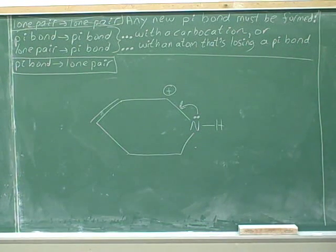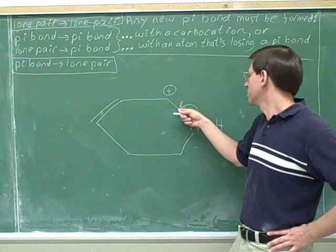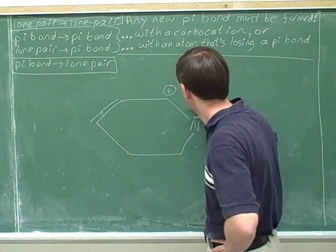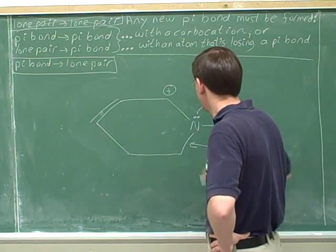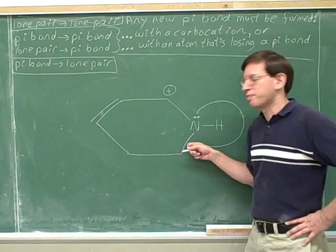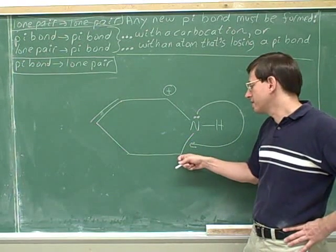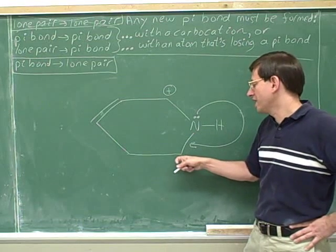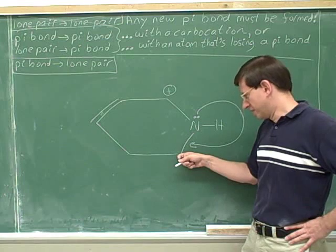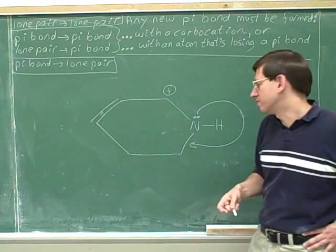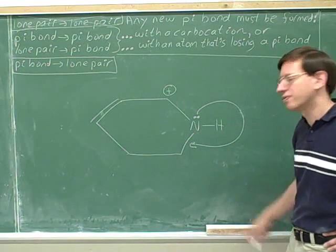Is this legal? We're forming a pi bond, but there's no worries because we're forming it with a carbocation, so this is okay — this is a good arrow. How about this one — is this legal? Again, we're forming a pi bond, but this is not a carbocation down here. The only way this atom could gain a new pi bond is if it also lost a pi bond, but this carbon doesn't have any pi bonds to lose. So there's no way we could legally put a new pi bond on this carbon. This is a wrong arrow.